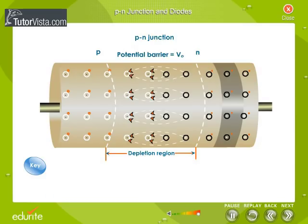From the figure, you can clearly see that the potential barrier V₀ that is set up gives rise to an electric field that prevents the respective majority carriers from crossing the barrier region.